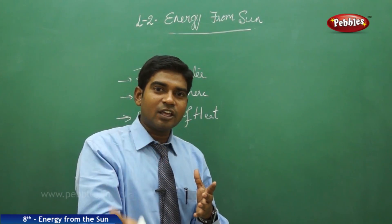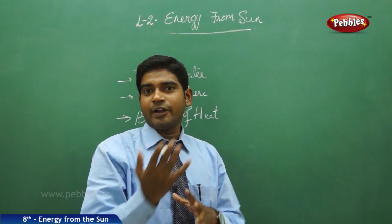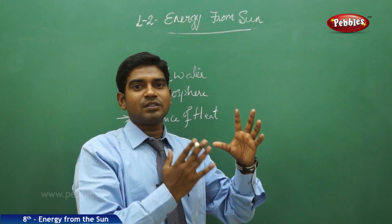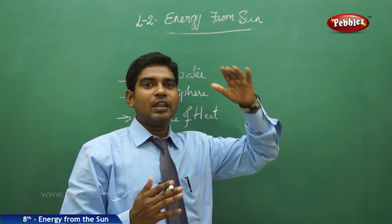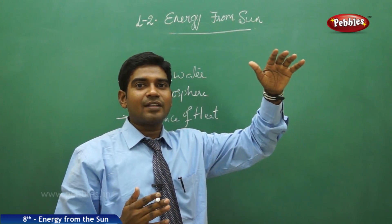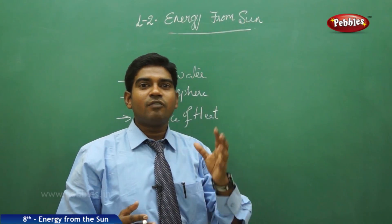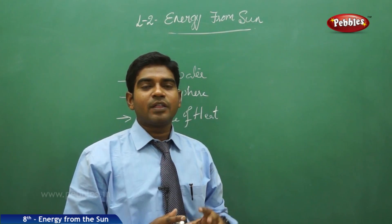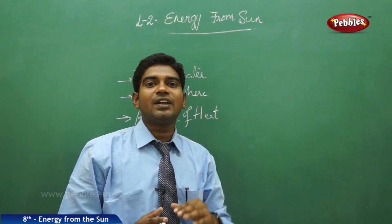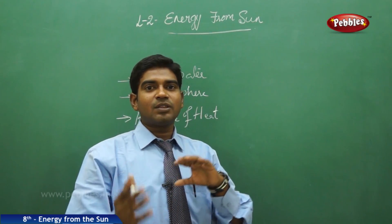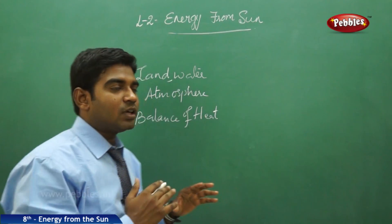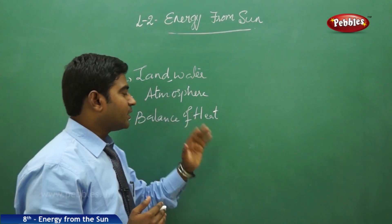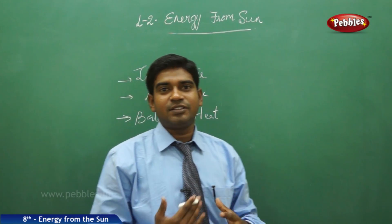The atmosphere near the equator has more heat and is more humid in nature when compared to other places away from the equator, like the Tropic of Cancer regions and above, which have moderate heat in the atmosphere. This is a basic variation we can understand from the relative energy of heat to the atmosphere. Now, the balance of heat — how is the heat balanced?